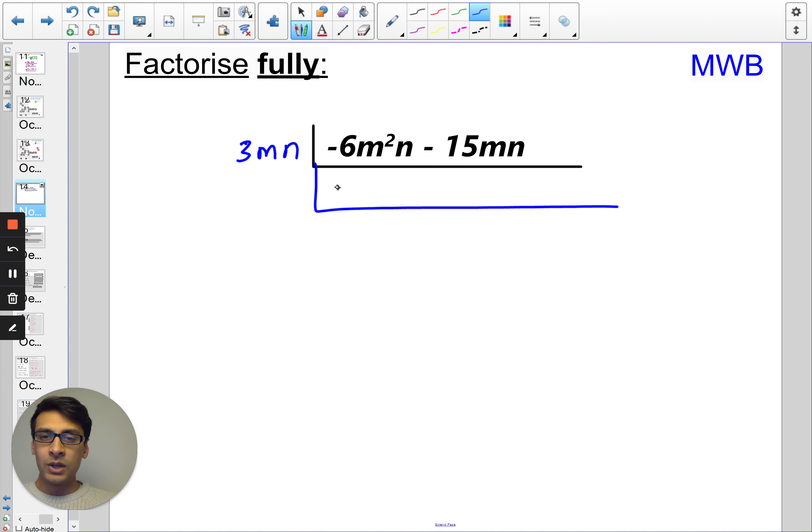Then I can see 3 times negative 2n take away 3 times 5 is 15 and then mn is already there. So this potentially gives me an answer of 3mn times negative 2m minus 5.